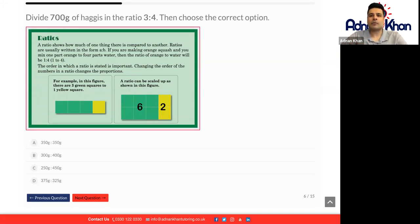Divide 700 grams of haggis in the ratio 3 to 4. Now to divide this particular ratio, what we're going to do is first of all we add the numbers of the total ratio up. So 3 add 4 gives us 7.